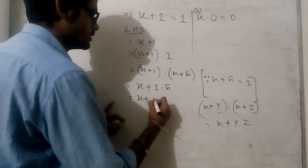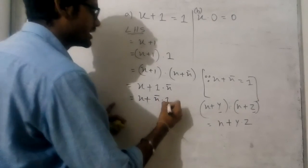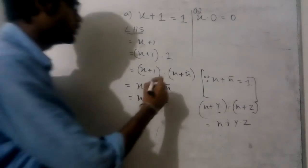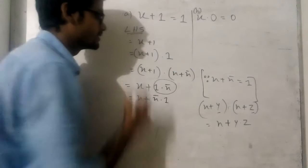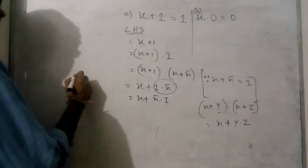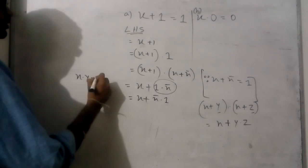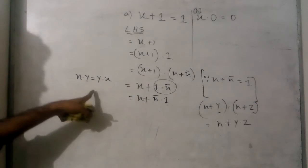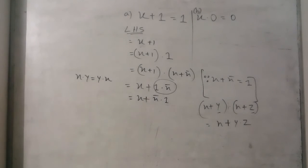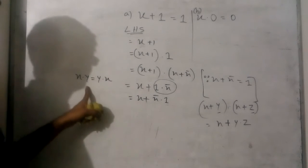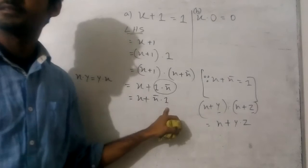So x plus x bar into 1. We can change the sides. We know that x into y equals y into x — the name of this formula is the commutative law. So from our commutative law we can change the sides.